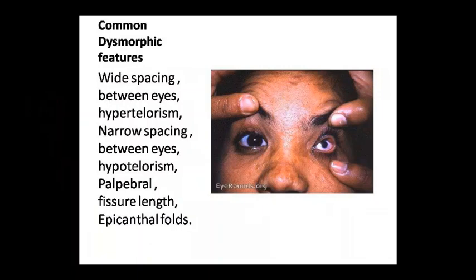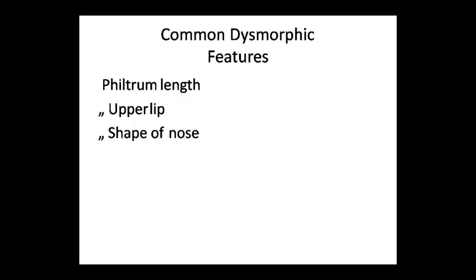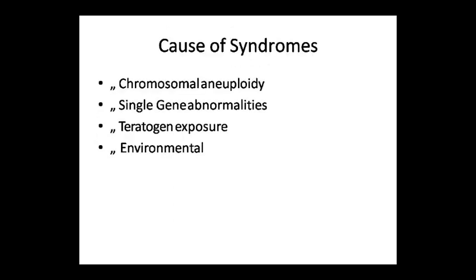There are many disorders in common dysmorphic features. The upper lip and nose shape can be seen as dysmorphic features. Or fingers — like you have seen Hrithik Roshan, which is also a dysmorphic feature. This is an example of this.